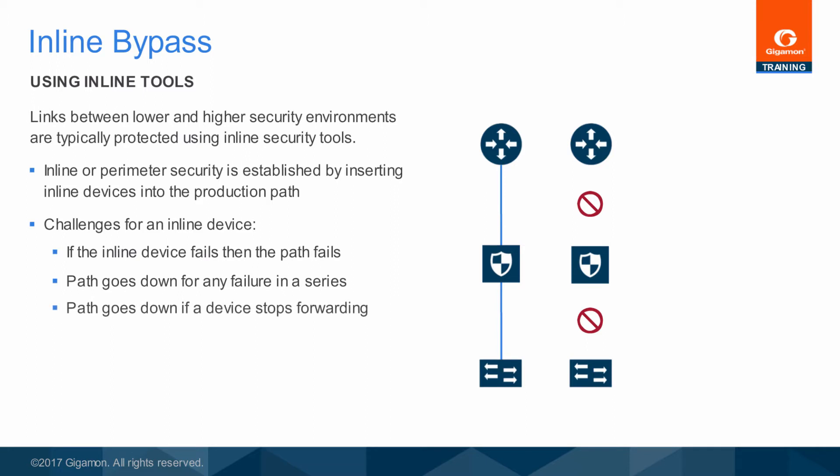Sometimes the inline device is still up, but has stopped forwarding traffic. This condition is usually much worse than a hard down failure because the network does not know to fail over to an alternate high availability path or to send any type of alert.